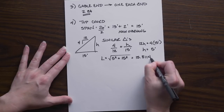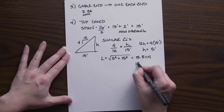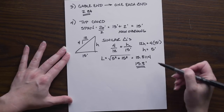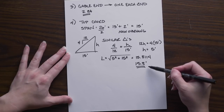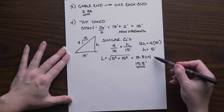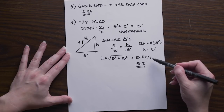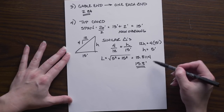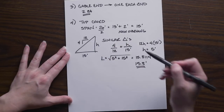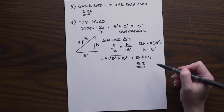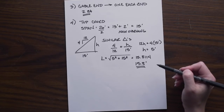Our result is 15.8114 feet, rounded to 15.8 feet as our final answer for the top chord. However, when using this number in future calculations, we will always use the unrounded number 15.8114. This is a very important number to get correct, as we will be using this length for multiple calculations.